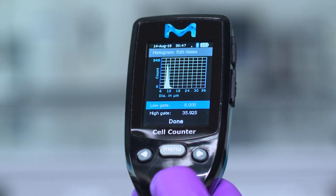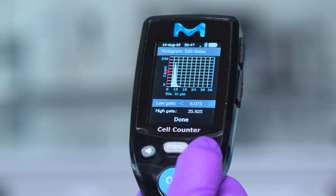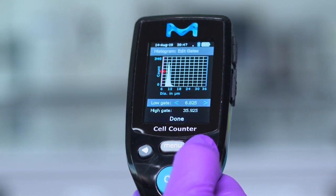Press OK to highlight the low gate and increase or decrease the gate with left and right arrows on the SEPTOR device and press OK.